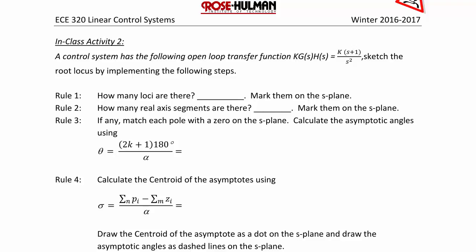The first question is, how many loci are there? Mark them on the s-plane. Since we have two poles and one zero, one pole is going to go to that zero, and the other pole is going to go to infinity. So we have two loci.